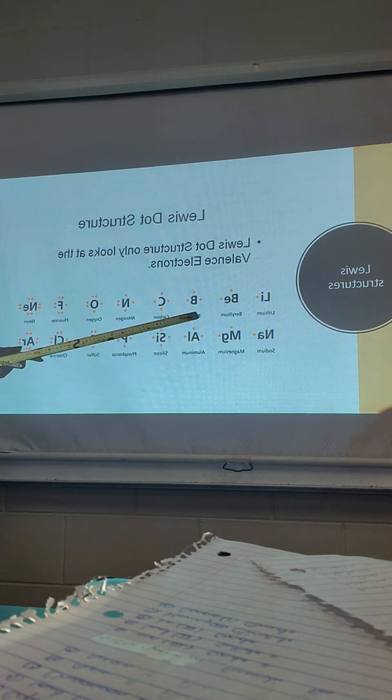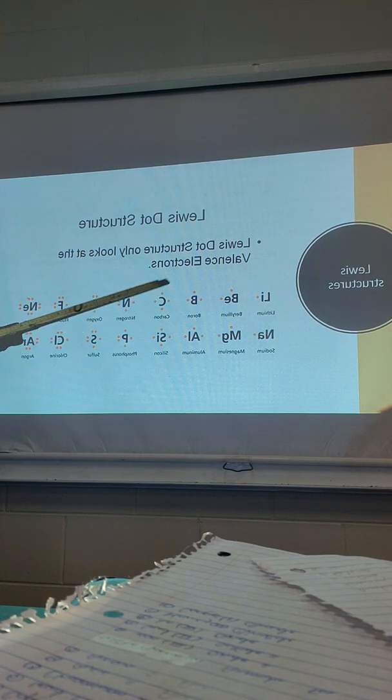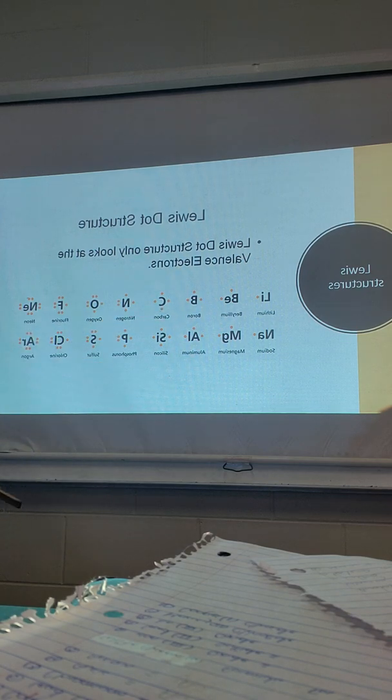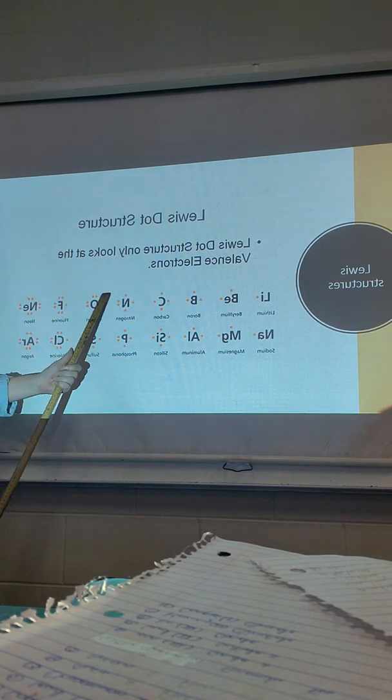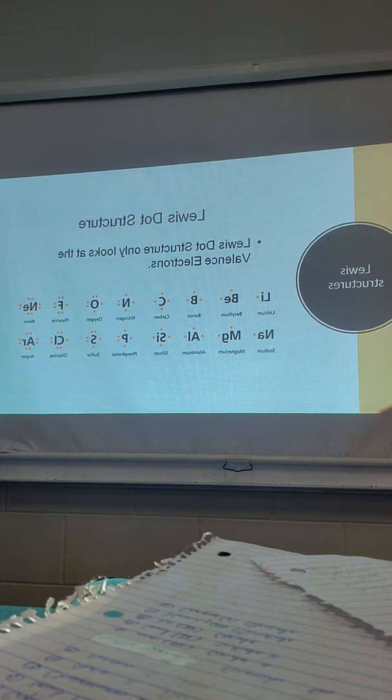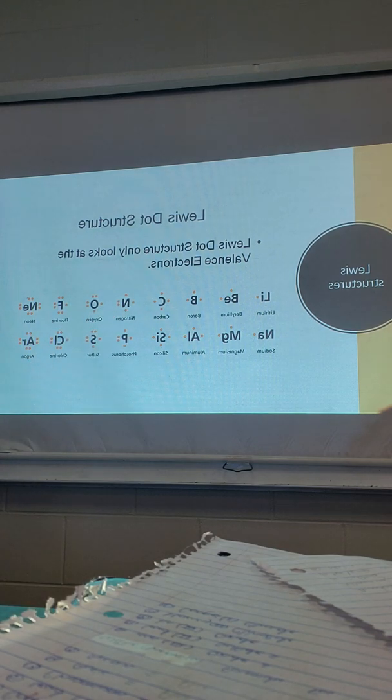All right. So when you're drawing the Lewis structures, it's very easy. All you have to do is put the symbol. All you have to do is put the symbol. And then around it, you're going to put the valence electrons. Here's the trick. When you put the valence electrons, I want you guys to think of it like a compass. So, here you have north, east, west, and south. Put one dot in each, like, what is it called? Cardinal point. Cardinal point. Okay. Very good. I don't know how you do that. So, put one dot in each cardinal point before you start pairing up.